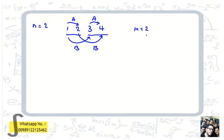We want to find the smallest k such that at least two stations are both linked in A and B. Since we found an example with k equals 2 where no pair of stations is linked in both A and B, the answer is greater than 2.